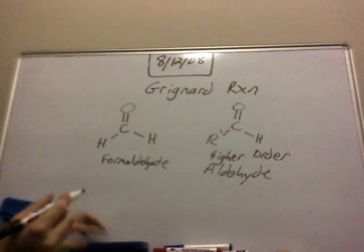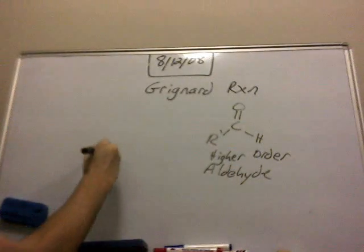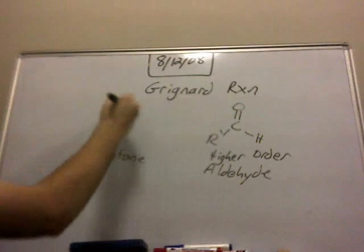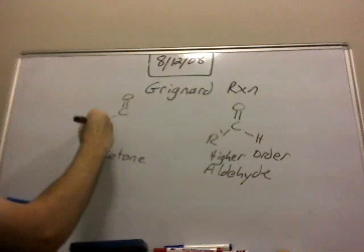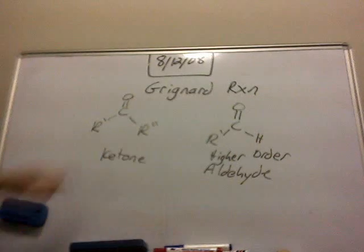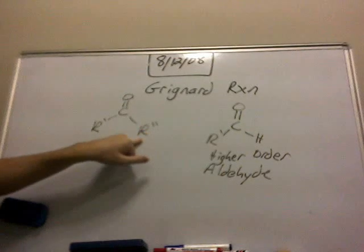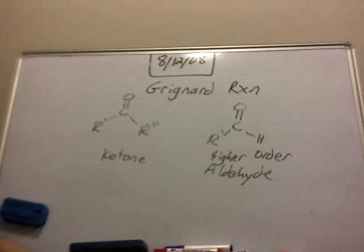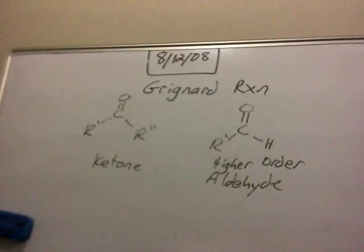Now the ketone is almost the same, and if you probably guessed it, there's just another carbon species or variable group here — I'll call it R prime 2. Let me move the marker board a little closer because it becomes invisible.